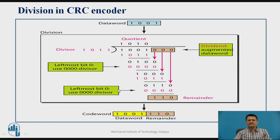Now let us understand how error is detected using CRC with an example. Assume the data you want to send has 4 bits. The generator polynomial gives a divisor of 4 bits, so I append 3 zeros to the data. Then I carry out mod-2 division. When carrying out mod-2 division, you look at the most significant bit. If that bit is 1, I write the quotient as 1 and write the full divisor below, since in mod-2 division, subtraction is analogous to XOR.